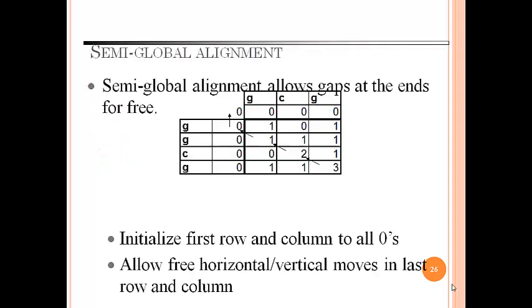Here the score is plus 2 for the given example. Now semi-global alignment. Semi-global alignment allows gaps at the ends for free. It initializes first row and column to all zeros and allows free horizontal and vertical moves in last row and column.